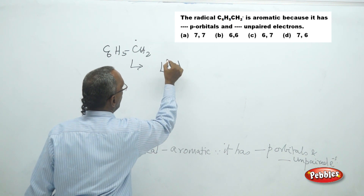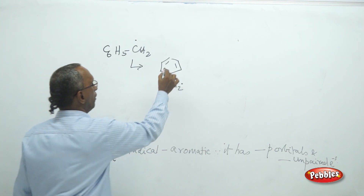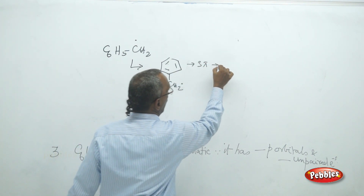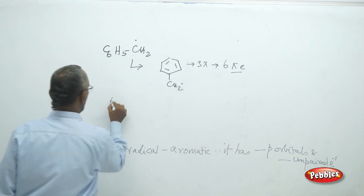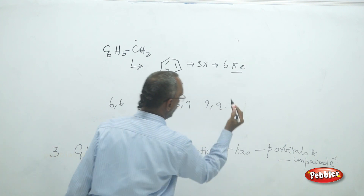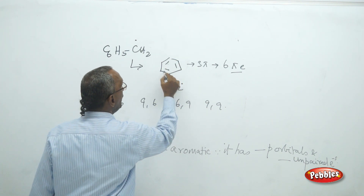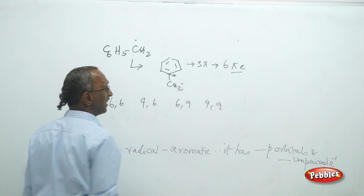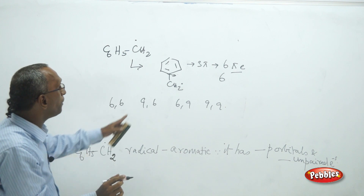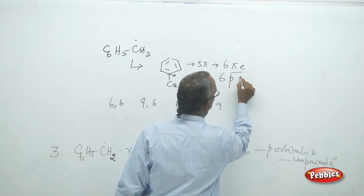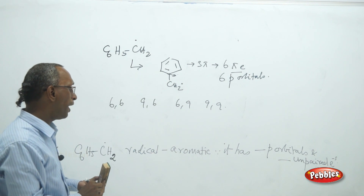Since it is the benzyl radical, we write it with alternate double bonds and CH2 dot. There are 3 pi bonds, and each bond consists of 2 electrons, so there are 6 pi electrons. There are 7 carbon atoms total, but only 6 carbon atoms are involved in resonance — they are in the ring. The 7th carbon atom is outside the ring. The ring carbons are involved in sp2 hybridization, so it contains 6 p orbitals and 6 unpaired electrons. That is why it is aromatic.